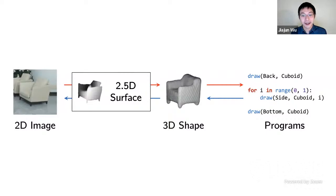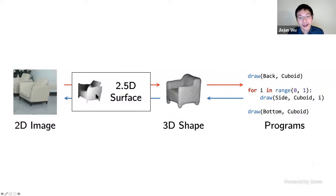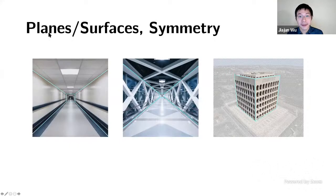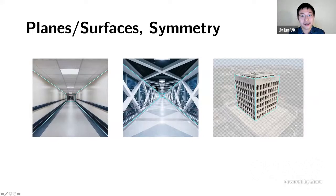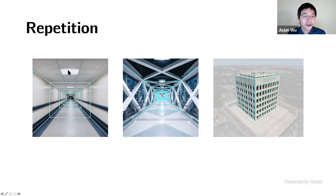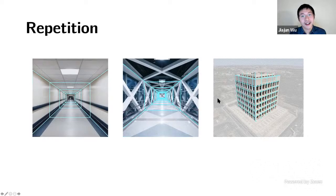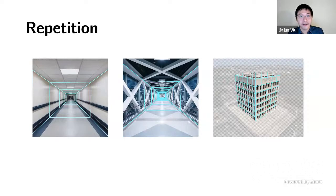Such program-like and procedural representations apply not just to single objects but extensively to 3D scenes. In corridors and buildings, we observe planes that are smooth and rectangular, with reflectional and rotational symmetry, and lots of repetition — ceiling lights repeating, windows repeating on building facades. Can we exploit these universal structures like repetition and symmetry for more interactive, efficient, and flexible design and editing — for example, making a building taller or wider in an image editing interface?